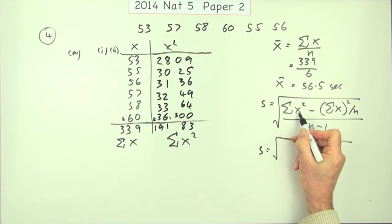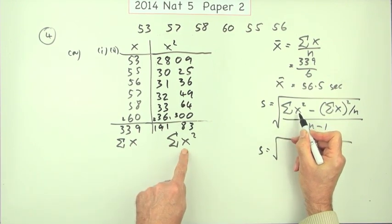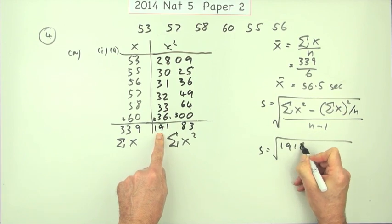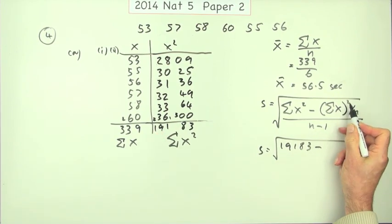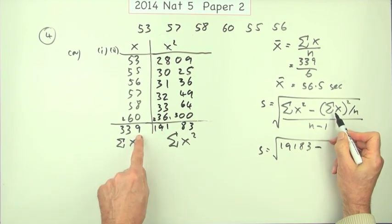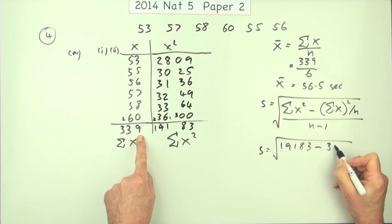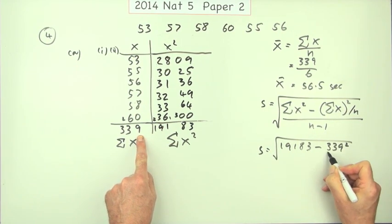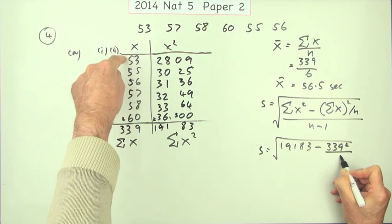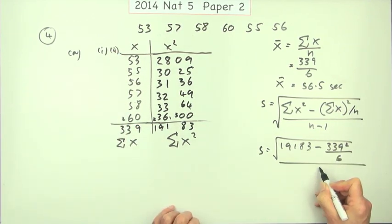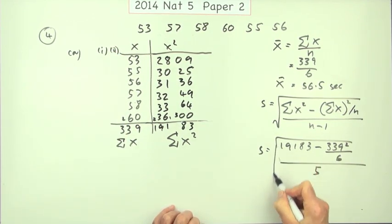So putting it into this then, you would have the sum of the x squareds. Oh, that's this one here. That was 19183. The square of the sum of the x's, that's going to be 339 squared all over, and how many there are, six, all over five. And of course that extends down over them all.